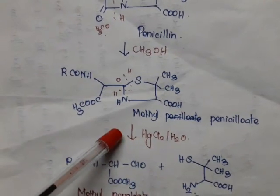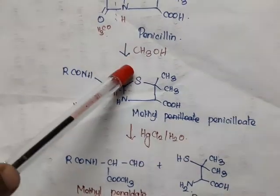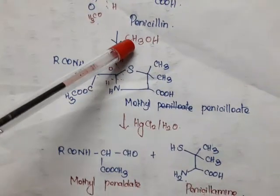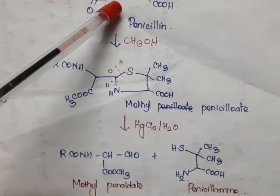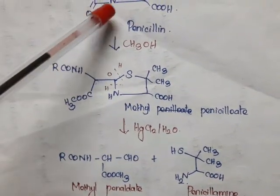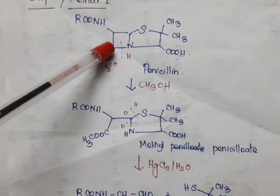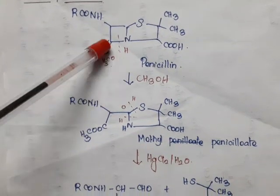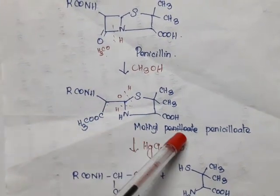So how are we getting methyl penicilloate? Penicillin on reaction with methanol: the bond between carbon and nitrogen is broken. With the nitrogen H is added, and with the carbon OCH3 is added, and we are getting methyl penicilloate.